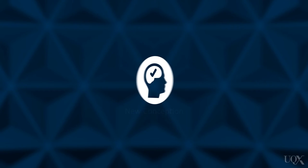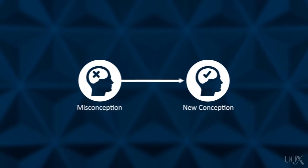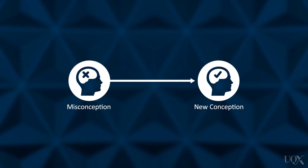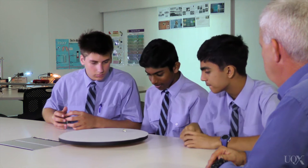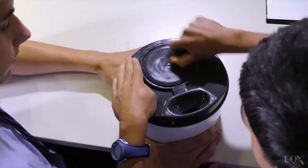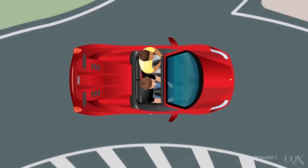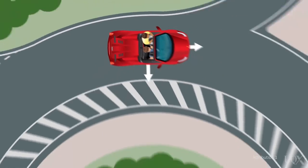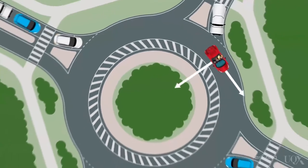In order to make a conceptual change, you must first be engaged in the cognitive process. Often a good instructional hook is required. Here, three experiments to develop the notion that centrifugal force exists, and everyday experiences such as turning a corner in a car, are used.